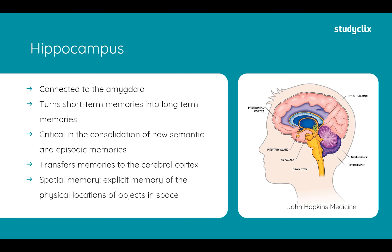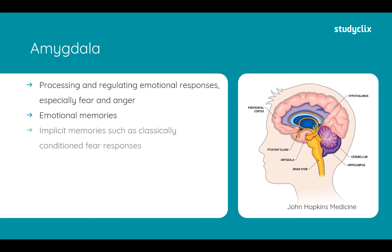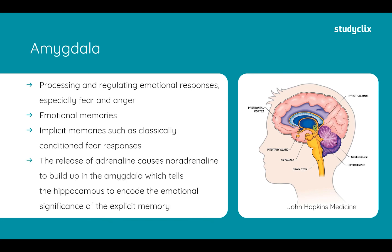Moving on to the amygdala, which is connected to the hippocampus. The amygdala is responsible for processing and regulating emotional responses, playing an especially big role in fear and anger. It plays a strong role in emotional memories and implicit memory, such as classically conditioned fear responses. When we get stressed, we release adrenaline, causing noradrenaline to build up in the amygdala, which then signals the hippocampus to encode the emotional significance of the event. For example, encountering a snake triggers this chain, so we later remember the fear response associated with that encounter.